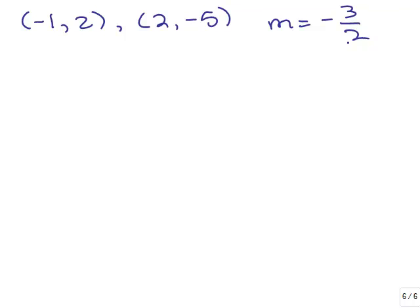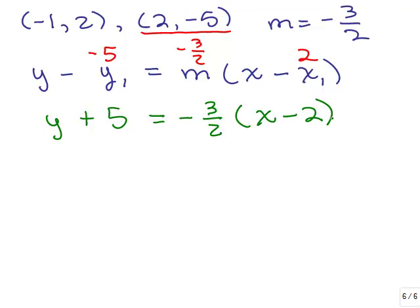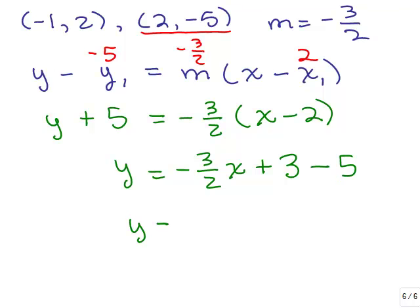We're going to use the point-slope formula again, but we'll plug in the other ordered pair because it doesn't really matter which one you plug in. So plugging in the ordered pair 2, negative 5: I'm going to put in 2 for my x1, negative 5 for my y1, and still use negative 3 halves for m. That gives me y plus 5 equals negative 3 halves times x minus 2. Solving for y with the distributive property: I have negative 3 halves x — negative 3 halves times negative 2 is plus 3 because the minus signs cancel — then subtract 5 from both sides. Again, I get y equals negative 3 halves x minus 2.